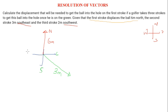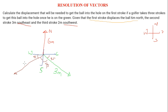The third stroke is two meters southwest — this is south and this is west. Southwest means it is dividing the corner into 45 degrees and 45 degrees, since the total angle is 90 degrees. So this is 45 degrees on each side. We have two meters here for the third stroke.